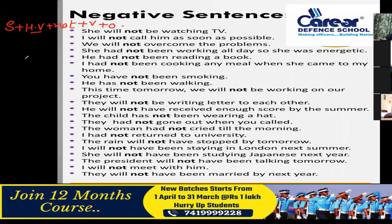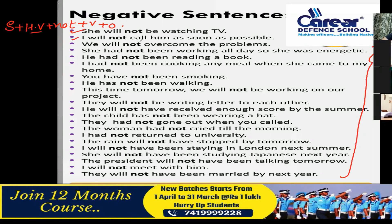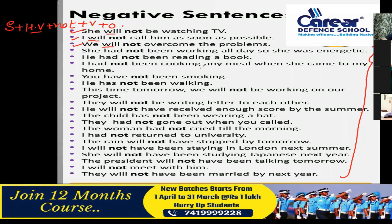All sentences with 'not' are negative sentences. For example: 'She will not be watching TV.' 'I will not call him as soon as possible.' 'He will not overcome the problem.' Notice that 'not' comes after the helping verb 'will.' More examples: 'She had not been working all day.' 'He had not been reading a book.' 'I had not been cooking any meals when she came to my home.' These are all examples of negative sentences — please read them, and if you have any problem, you can ask.